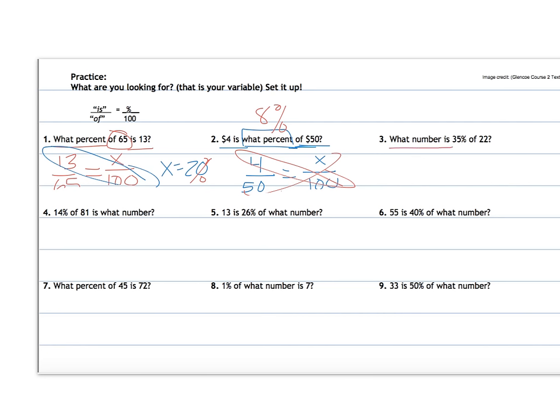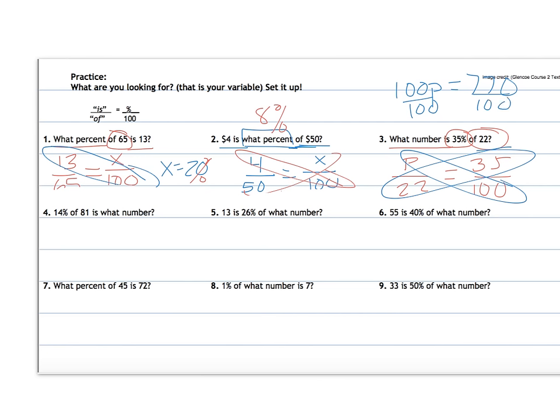What number is, that means I'm looking for my part, 35% out of 100 of 22. Cross products, I get 100 times what equals my 22 times 35, divide by 100. So I get that the part is 7.7. So that means that 7.7 is 35% of 22, that makes much more sense, it's less than 50%.